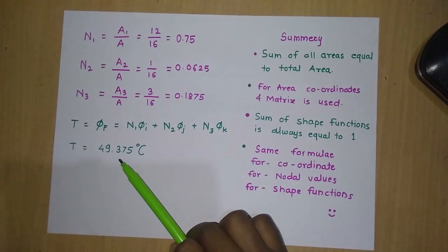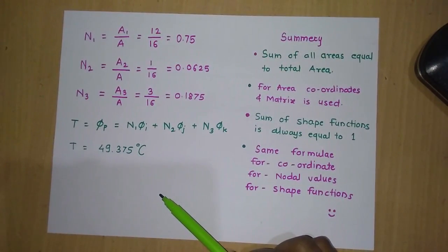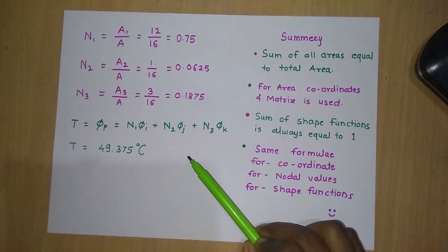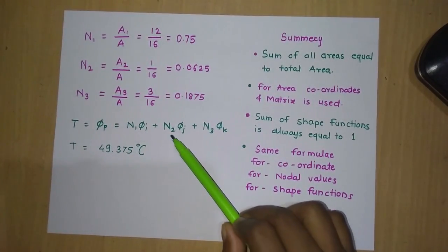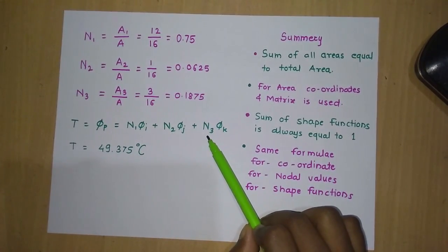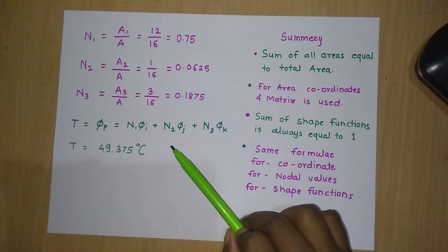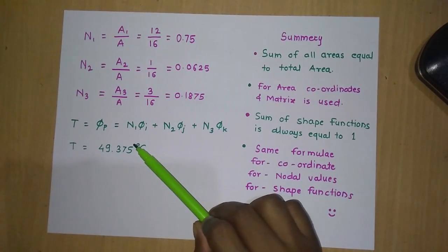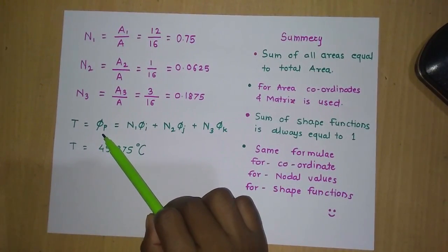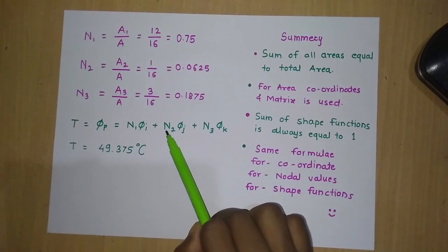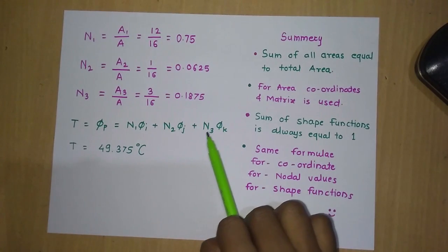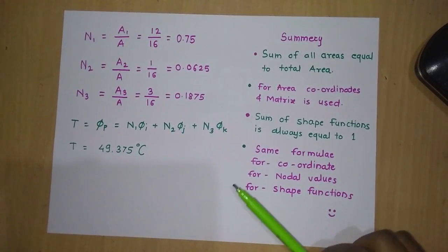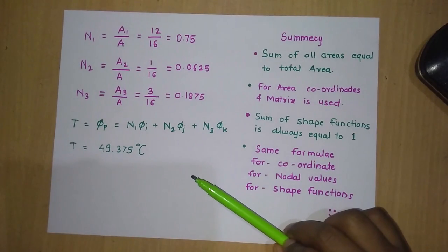In some problems, instead of temperature there may be displacement or other nodal values — the same formula applies. Also, if one shape function is given and others need to be calculated, the same area method can be used. Similarly, the coordinates of a point can be found using: x = N1·x1 + N2·x2 + N3·x3, and the same for the y coordinate.